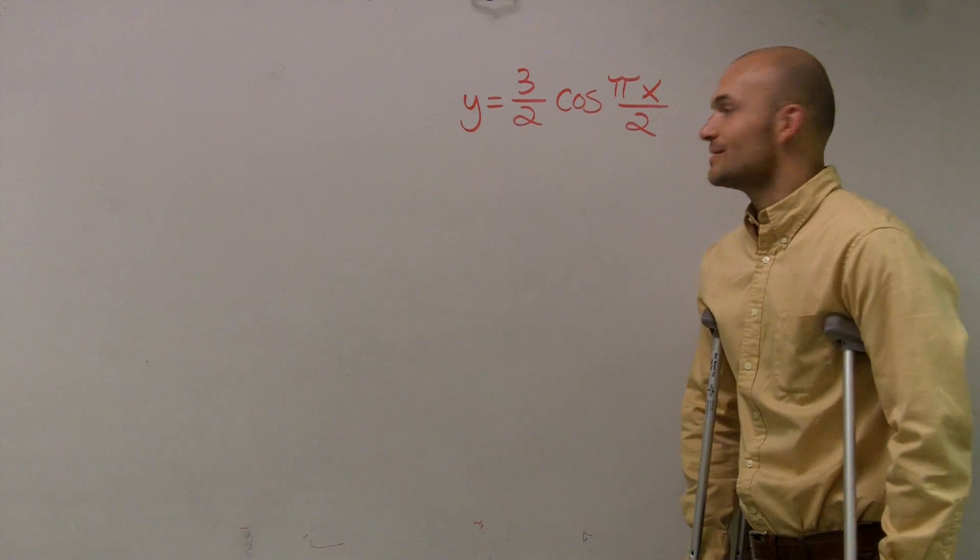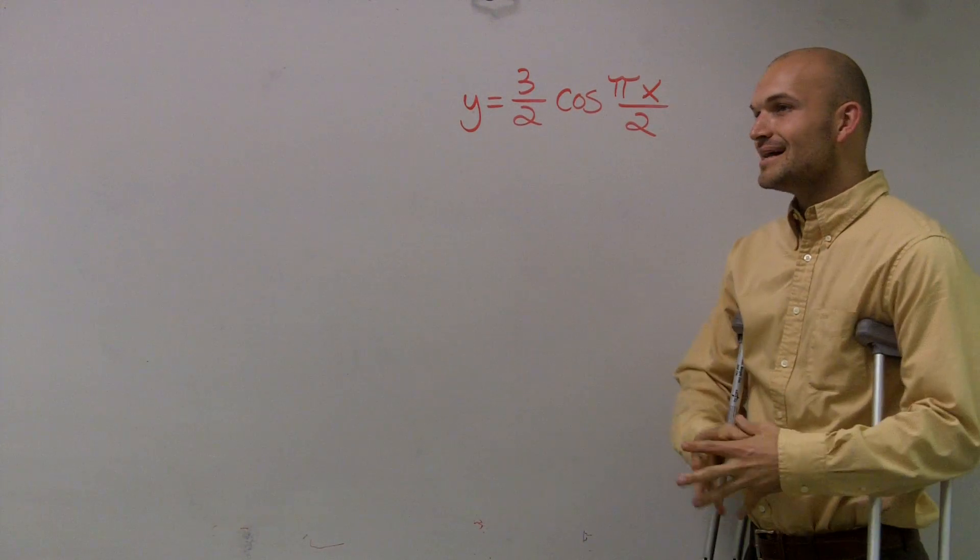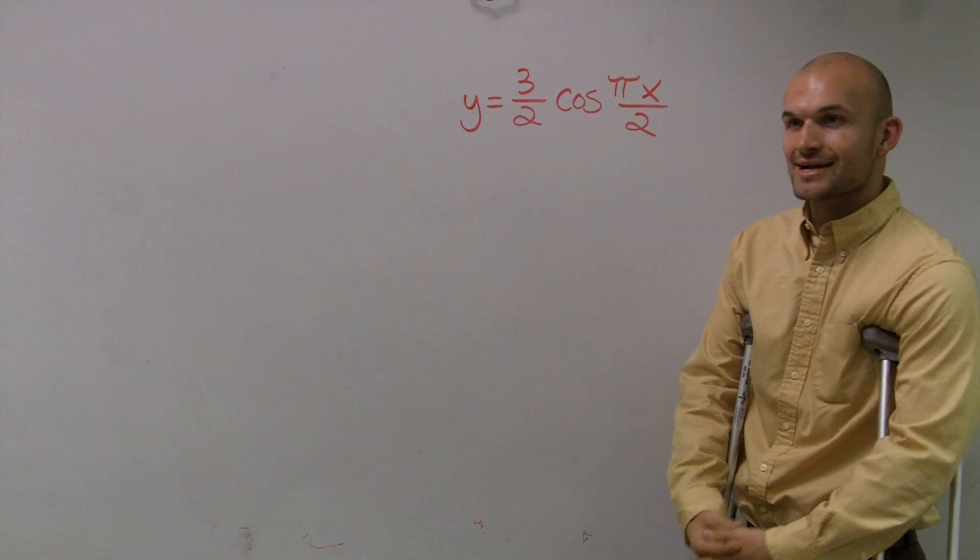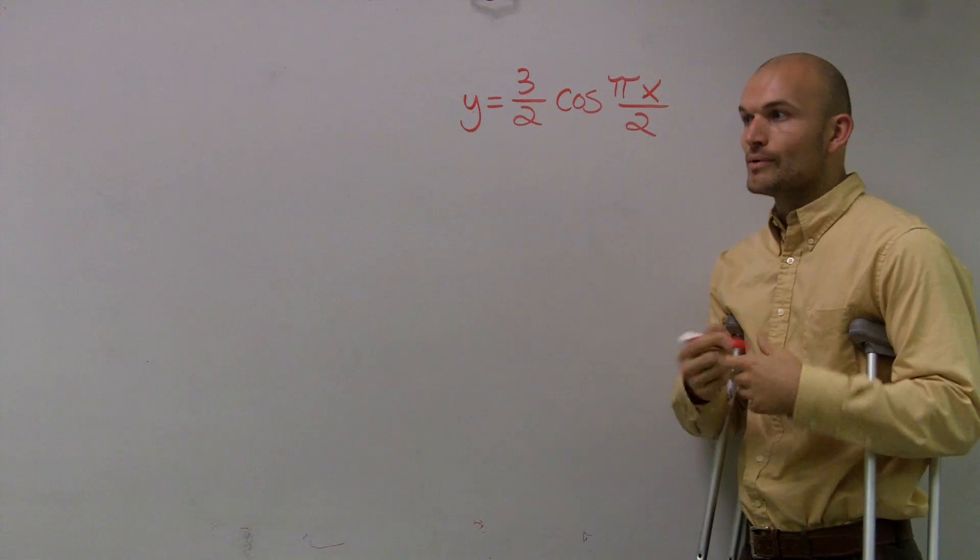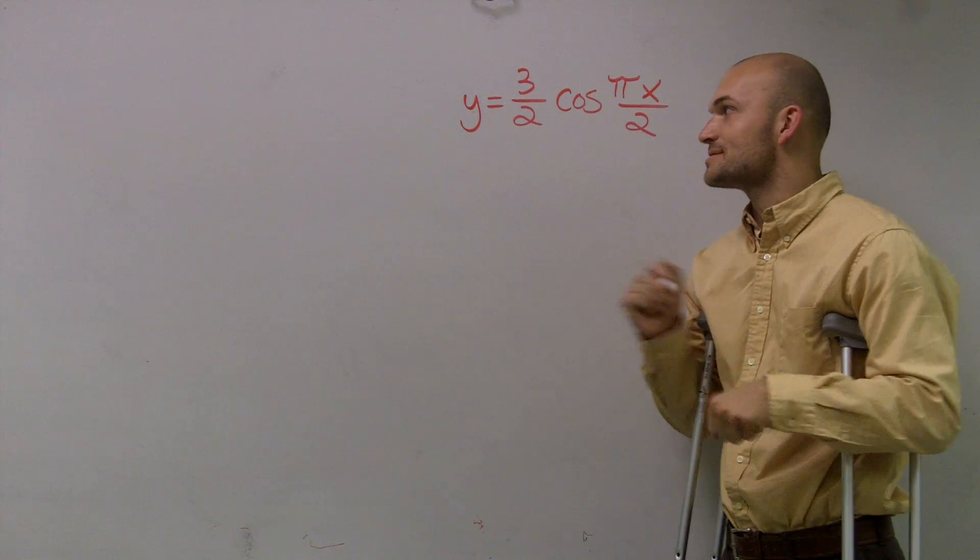If we have the equation y equals 3/2 times cosine πx over 2, what we want to do is find the amplitude and the period for this equation.